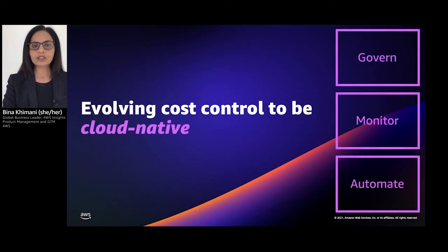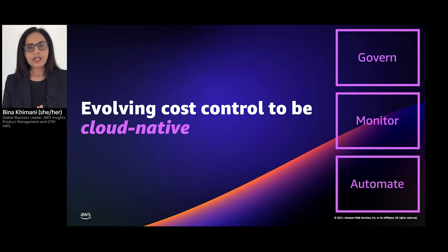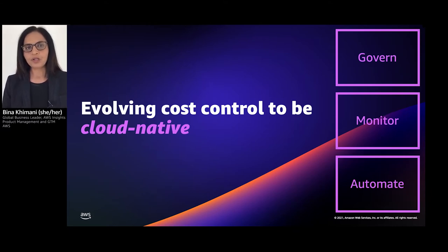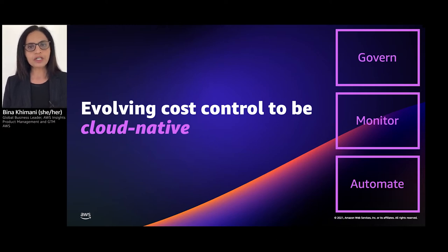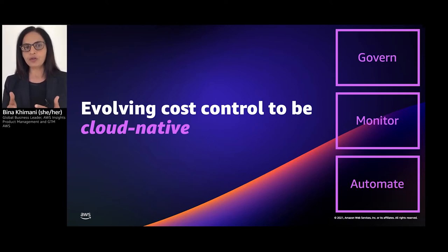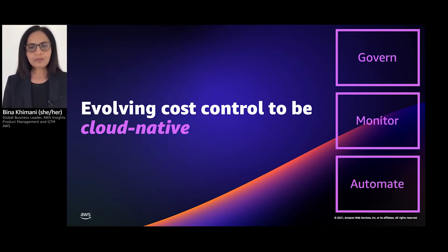Evolving cost control to be cloud-native is the next step in this journey. There are three building blocks we will talk about. First, govern and control. Second, reporting and monitoring. And the third, cutting across both, is automation — how do we implement these processes to achieve control at scale automatically? That's where we get to a point where we don't have to compromise with the speed of innovation while we are automating the controls.